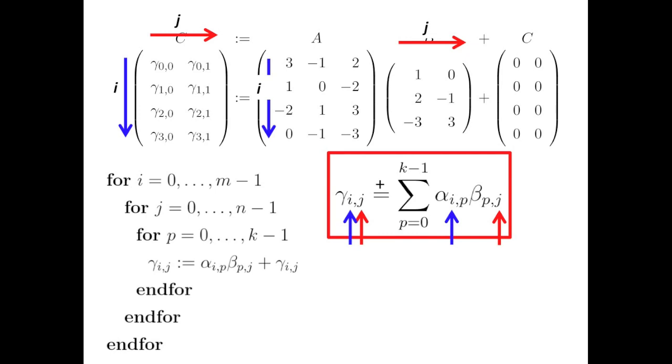The loops indexed with i and j make sure we visit each of the elements of c. The loops indexed with p performs the dot product to update the ij element of c.